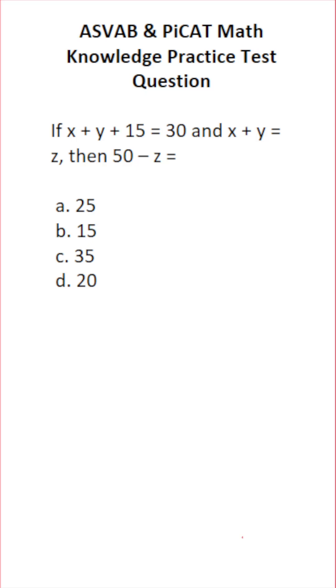This math knowledge practice test question for the ASVAB and PICAT says if x plus y plus 15 equals 30 and x plus y equals z, then 50 minus z equals. So let's start by copying these three statements down.